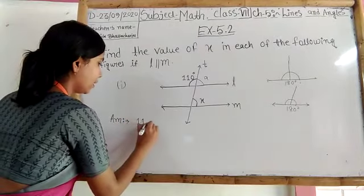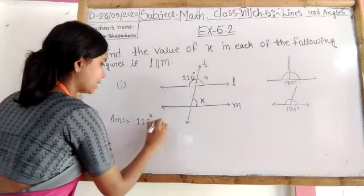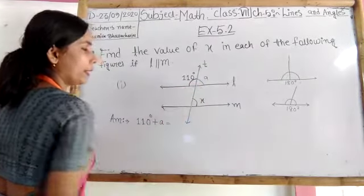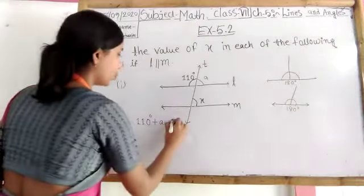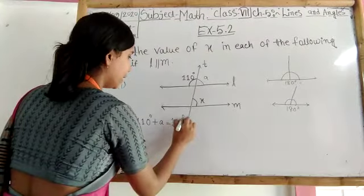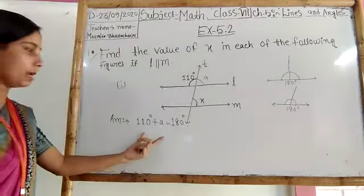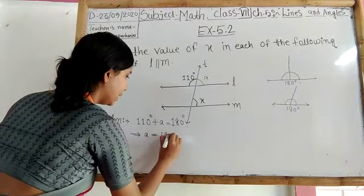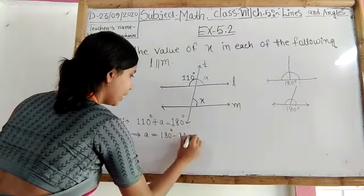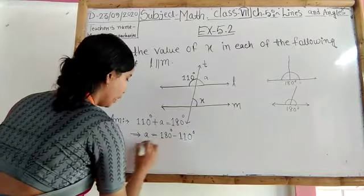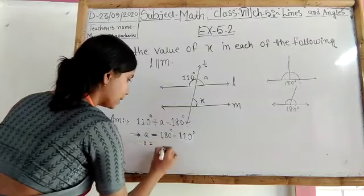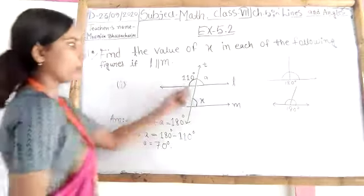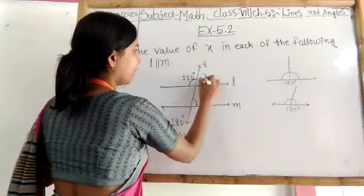So 110 degree plus a equals to, the full angle will be, linear pair the full angle will be 180 degree. So this will be 180 degree. So we need to find the value of a. So that means a equals to 180 degree minus 110 degree. So if I minus it then the answer will be 70 degree. So the value of a is 70 degree.